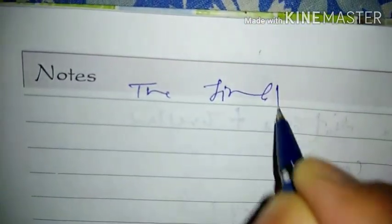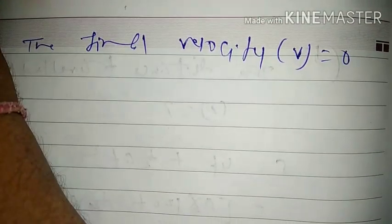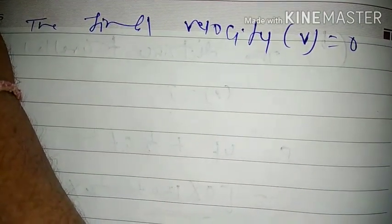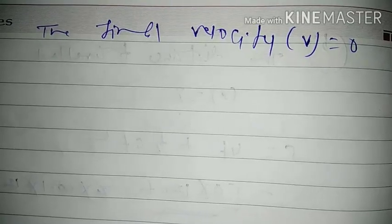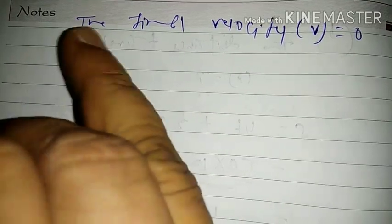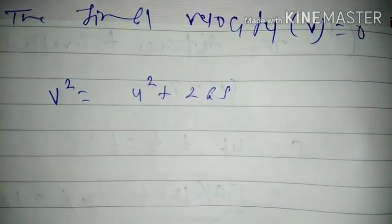The final velocity v is equal to 0 because the train is brought to rest. We have three equations, and in this situation we use v² = u² + 2as, because time is not given and we have to calculate distance s.